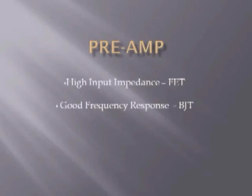This is accomplished by using a common source amplifier tied to a common emitter amplifier with appropriate biasing circuitry. The most important characteristics of the pre-amp are high input impedance and a good frequency response. High input impedance is accomplished using a field effect transistor and a good frequency response is obtained using a bipolar junction transistor.